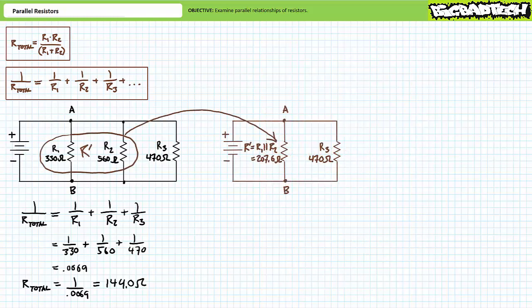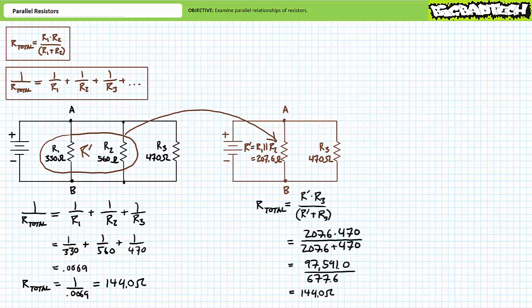There's yet another way of determining the total resistance of this parallel configuration of three resistors. Recall that the parallel combination of R1, the 330 ohm resistor, and R2, the 560 ohm resistor, yielded a total resistance of roughly 207.6 ohms. We can use this fact and visualize the circuit as that simplification — called R-prime — in parallel with R3. This is a perfect setup for the two-resistor formula. R-prime in parallel with R3 yields a total resistance of roughly 144 ohms, as previously.